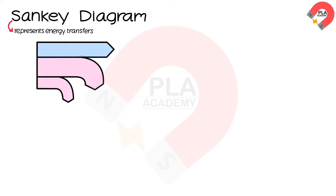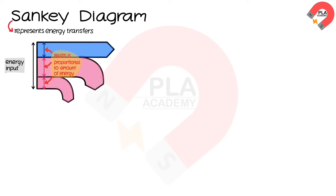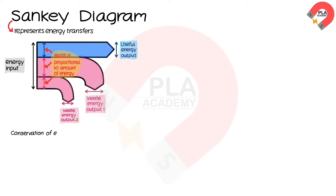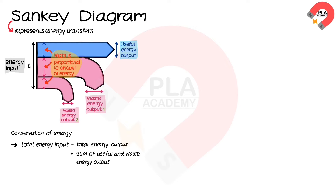Sankey diagrams can be used to represent energy transfers. These diagrams are characterized by splitting arrows that show the proportions of energy transfers taking place. The width of each arrow is proportional to the amount of energy being transferred. The left-hand side represents energy transferred into the system, the straight arrow pointing right represents useful energy output, and the arrow that bends away represents wasted energy. This reflects conservation of energy, where total energy input equals total energy output, which is the sum of useful and wasted energy output. Therefore, L1 = L2 + L3 + L4.